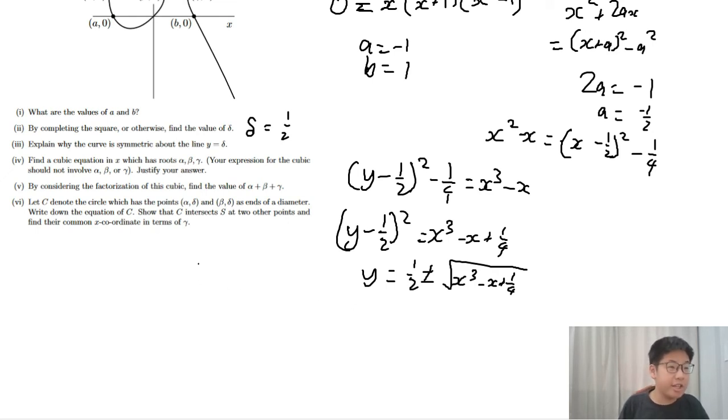Find a cubic equation in x which has roots alpha, beta, and gamma. Your expression on a cubic shouldn't involve delta. So by the factor theorem and considering the coefficient of x cubed, this cubic must factorize as x minus alpha, x minus beta, x minus gamma. So we calculate the cubic below the square root. So the cubic is x cubed minus x plus a quarter.